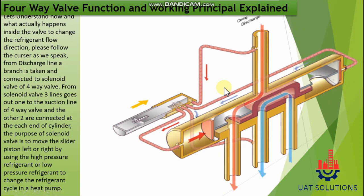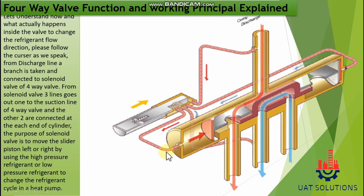Let's understand how and what actually happens inside the valve to change the refrigerant flow direction — please follow the cursor as we speak. From the discharge line, a branch is taken and connected to the solenoid valve of the four-way valve. From the solenoid valve, three lines go out: one to the suction line of the four-way valve, and the other two are connected at each end of the cylinder.